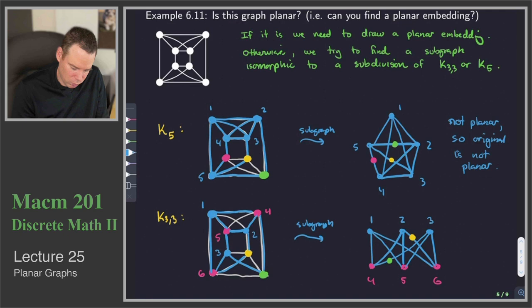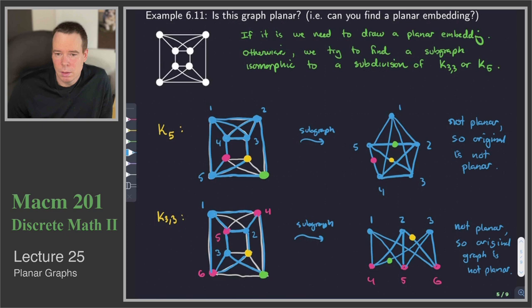We've found a subgraph of our graph which is a subdivision of K33. This is not planar, and so the original graph is not planar.